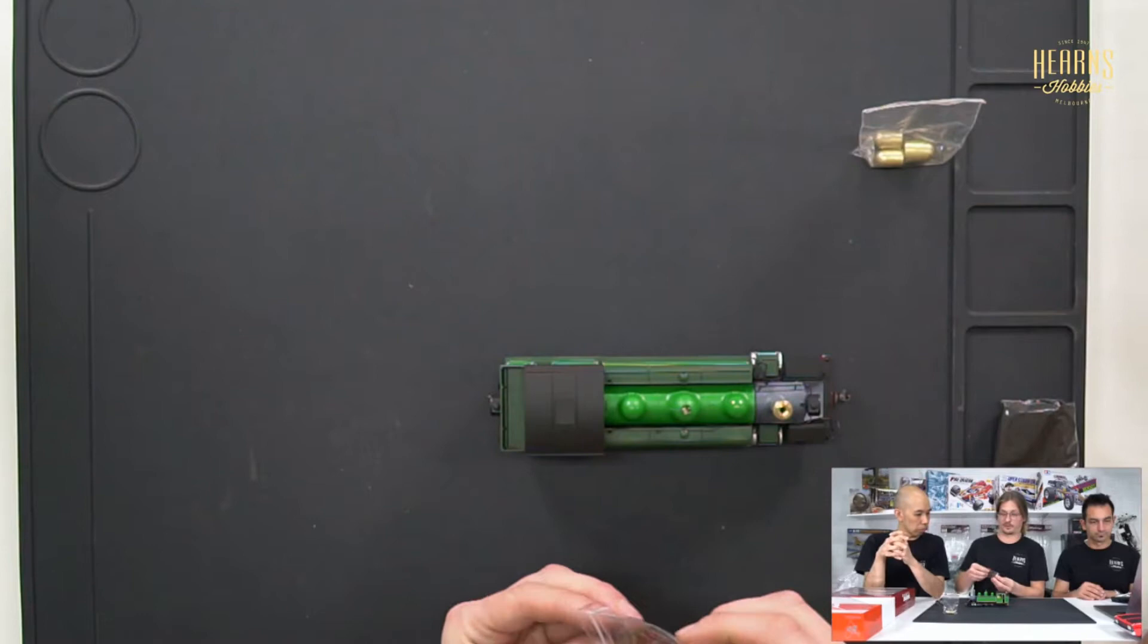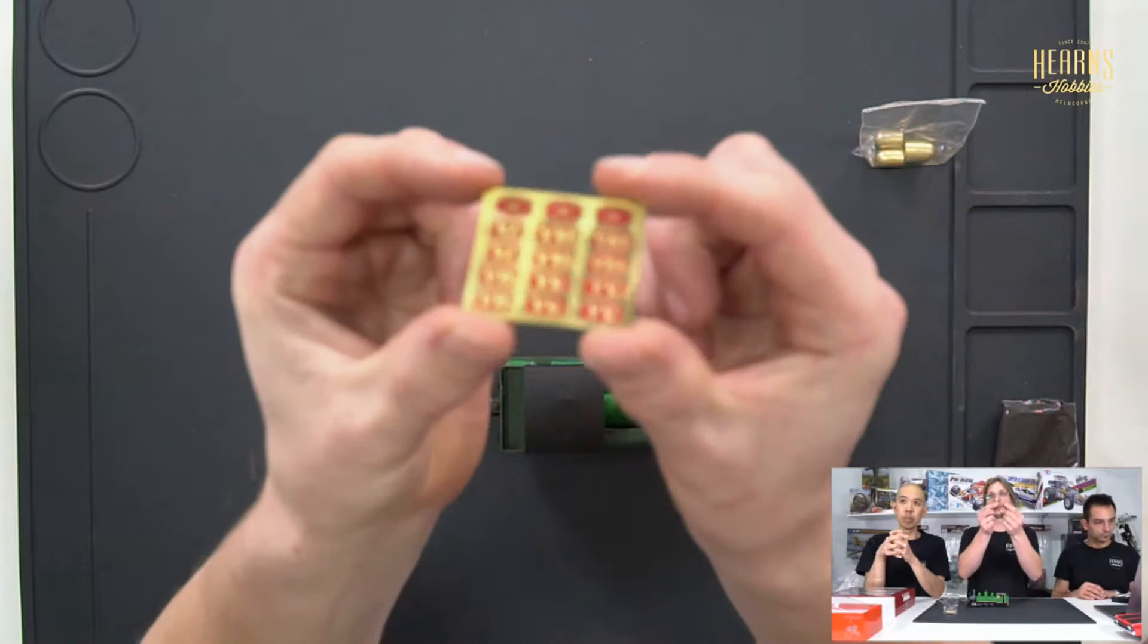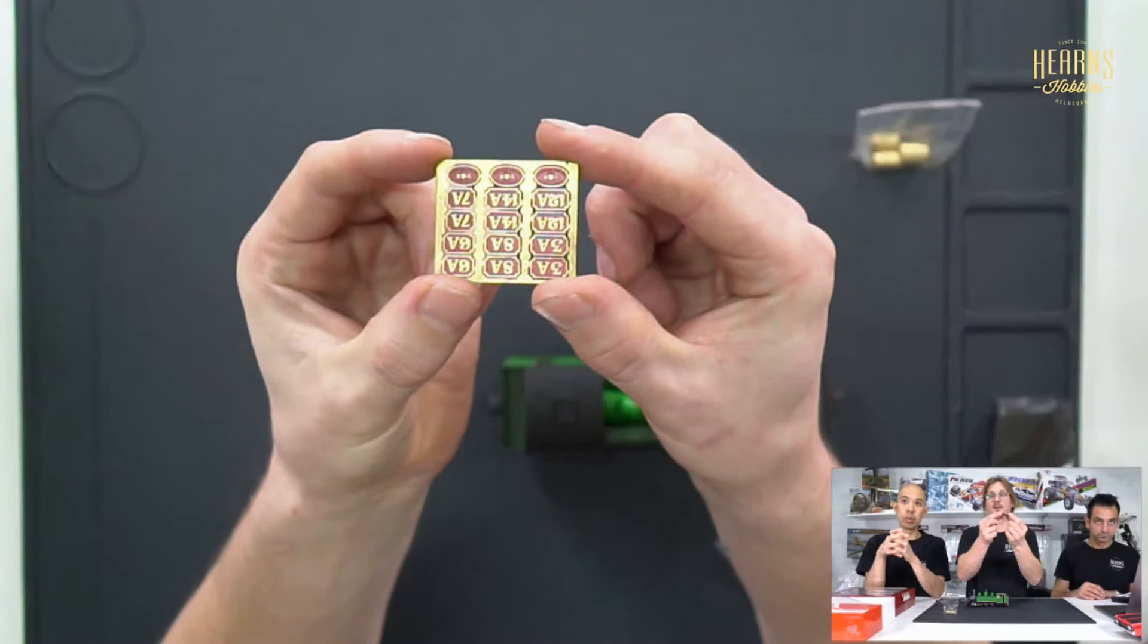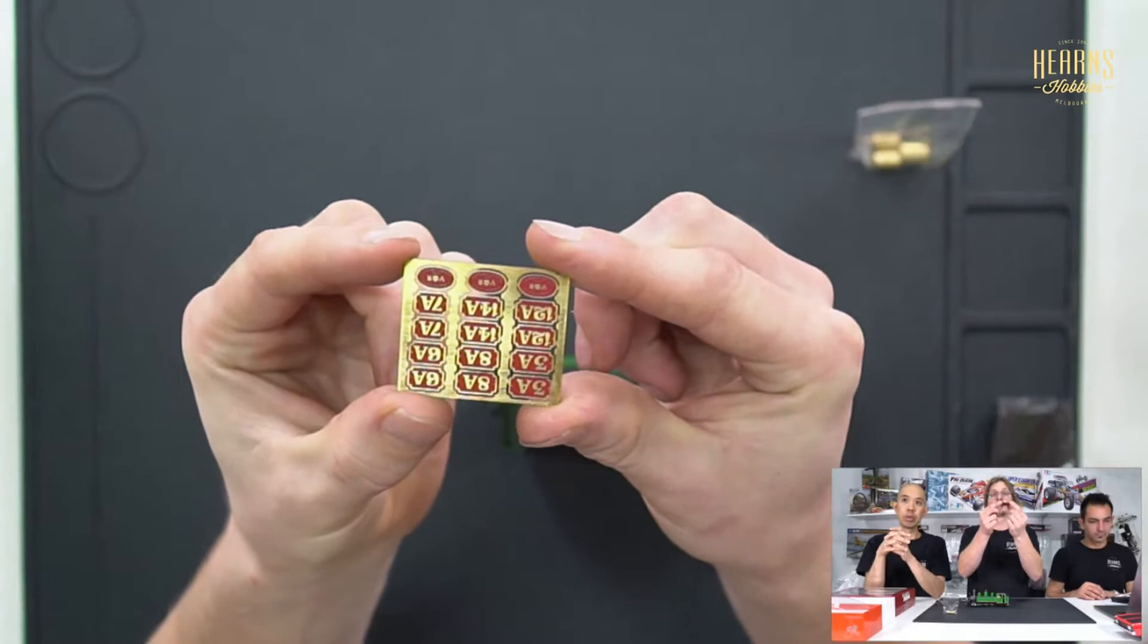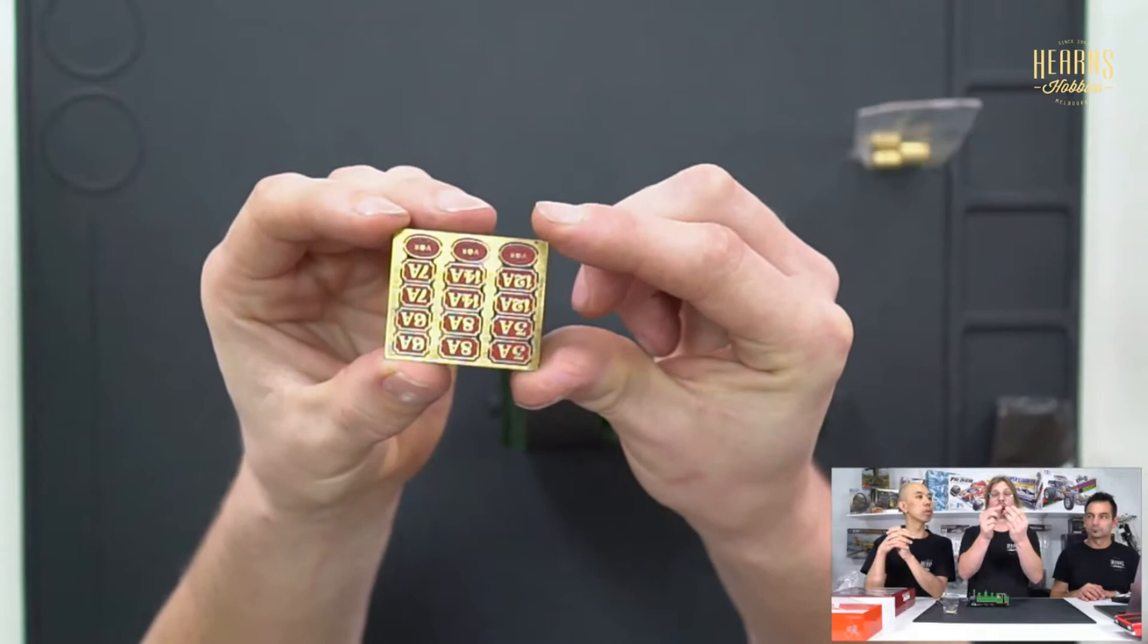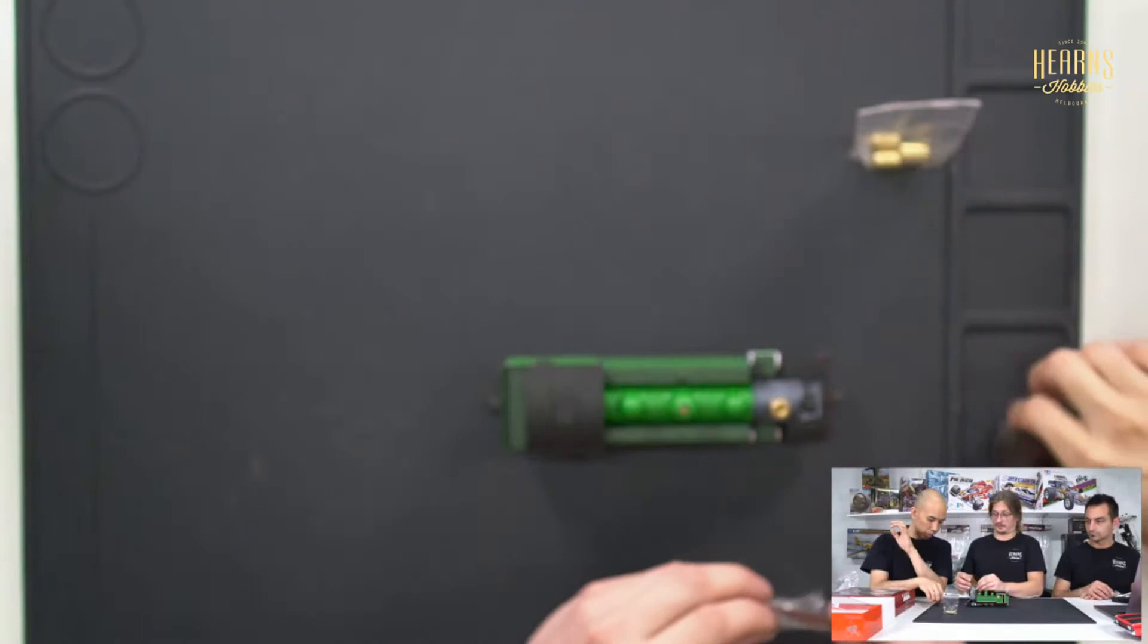They've given you the locomotive without numbers and these beautifully etched brass and colored numbers that you can apply yourself. You got the Victorian railways insignia of that time and all of the appropriate numbers for the locomotives that they produced.